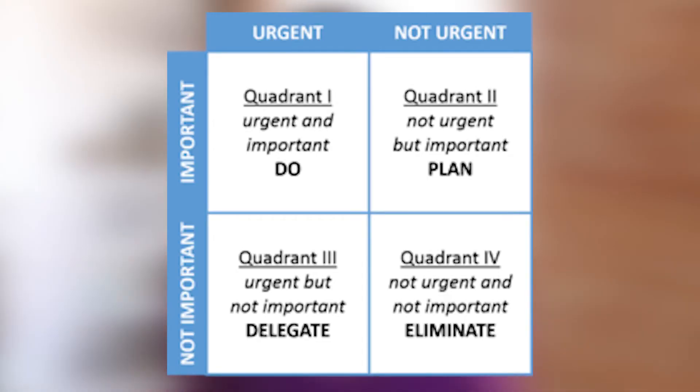In the fourth quadrant, we see items or tasks that are neither urgent nor important. When we see that, we can safely cross those off the list. This is what I like to call the elimination option — if they're neither important nor urgent, we aren't going to do them.